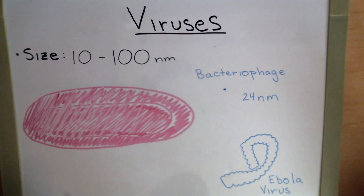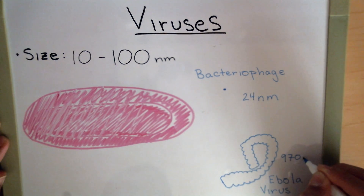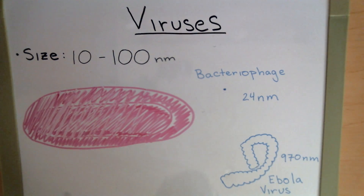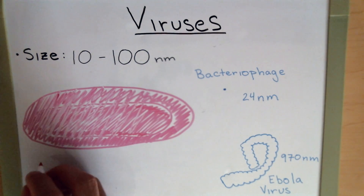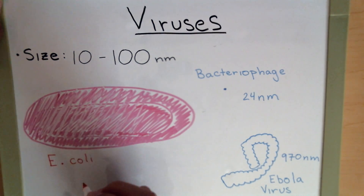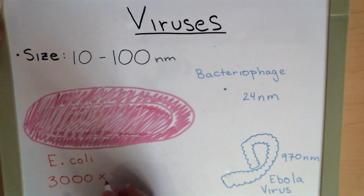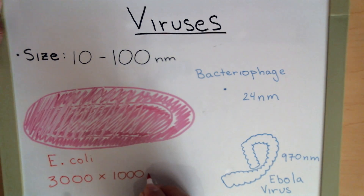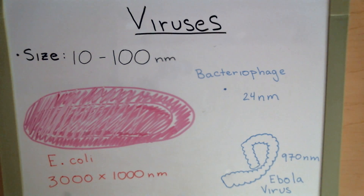Down here we have our Ebola virus, which ranges at about 970 nanometers. But if you look at this big giant thing over here in pink, we can see that this is not a virus — instead this is E. coli, which stands at 3,000 by 1,000 nanometers. So now you can see with some perspective how small viruses are compared to bacteria. For the whole quarter we've been looking at bacteria, and these are very, very small — but viruses are even smaller than that.